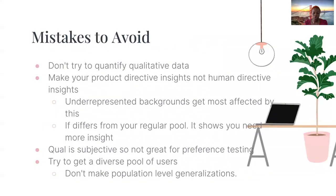However, there are some common mistakes when using qualitative data. The first is you don't want to try to quantify qualitative data. You don't want to start saying things like '80% of users noticed the button and were successful at the task.' Because with just 10 users, that's not statistically significant. You really want to focus on using terminology like 'most,' 'some,' or 'all,' and steer away from getting into statistics with your results.